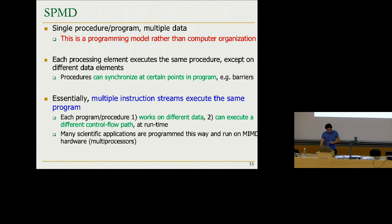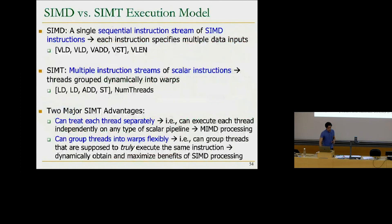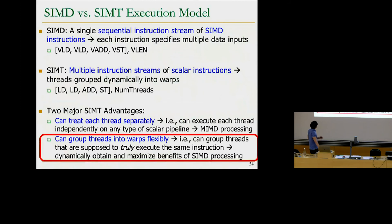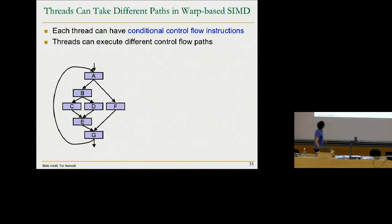The second major advantage of the SIMT model is that we can group threads into warps flexibly. The different threads execute the same program on different data instances but can potentially take different control flow paths. This brings us to how divergent control flow is handled in warp execution, which will be discussed further.